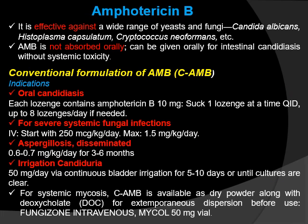The first frequently used antifungal drug described is Amphotericin B. It is effective against a wide range of yeasts and fungi such as Candida albicans, Histoplasma capsulatum, Cryptococcus neoformans, etc. Amphotericin B is not absorbed orally, so it can be given orally for intestinal candidiasis without systemic toxicity.